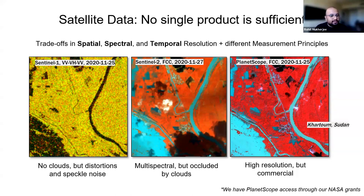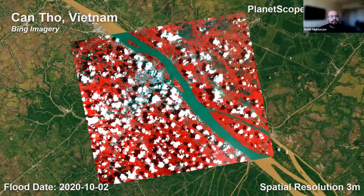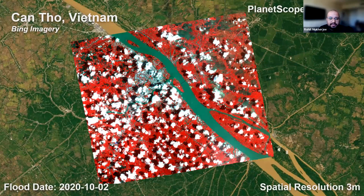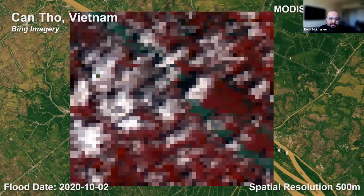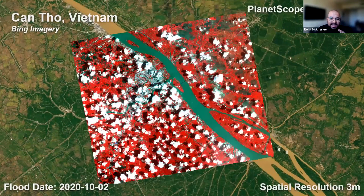Sentinel-2 doesn't have the issue with distortion and speckle noise — it's multispectral — but it can be obscured by clouds. PlanetScope offers high spatial and temporal resolution but is commercial and has its own issues. This example from a flood in Quang Ho, Vietnam, compares spatial resolution: PlanetScope at 3 meters versus MODIS resampled at 500 meters. You can see that at different resolutions we have very different types of information, which makes it very difficult to directly compare PlanetScope and MODIS.